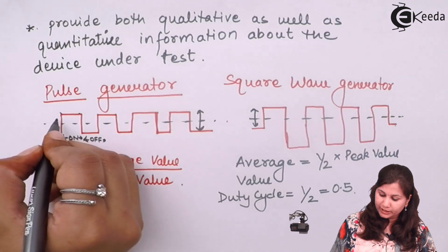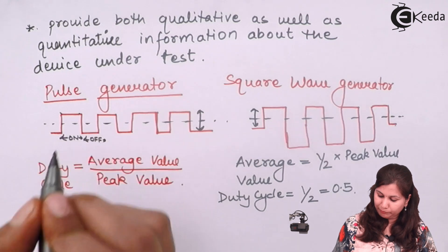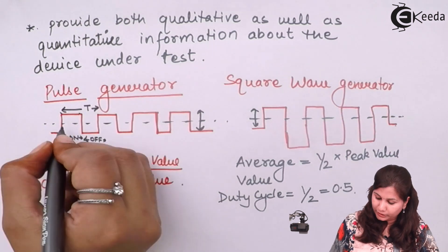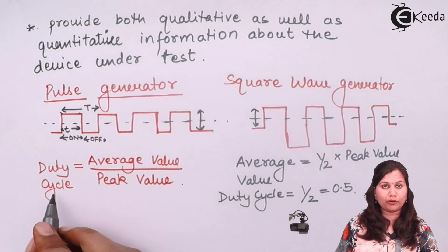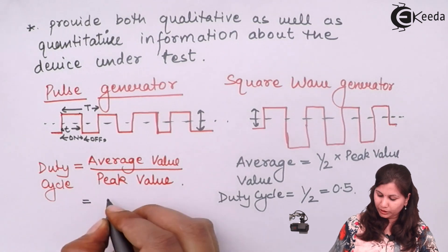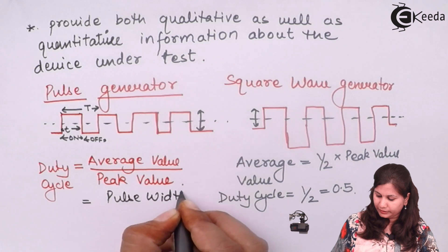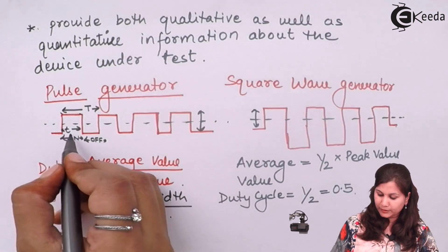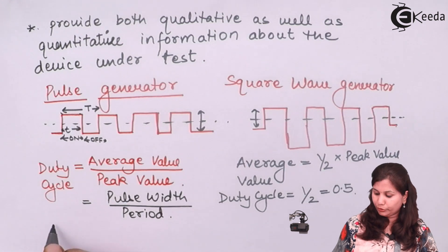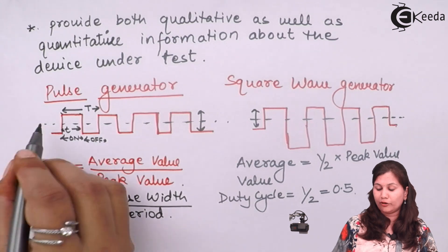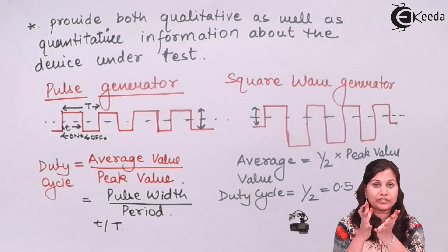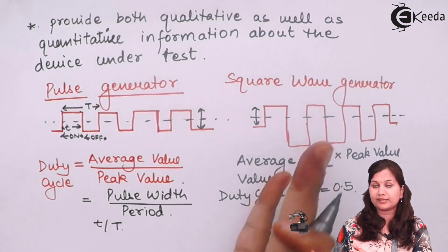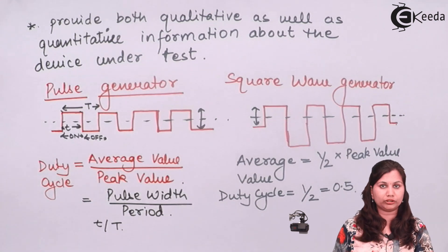In a pulse generator, we have different duty cycles depending upon the pulse width. If we take the time period T and the pulse width as small t, the duty cycle equals the pulse width divided by the period — that is, t divided by T. So the duty cycle for a square wave is 0.5, whereas the pulse generator has a variable duty cycle. Otherwise the functioning and applications of both generators are the same.